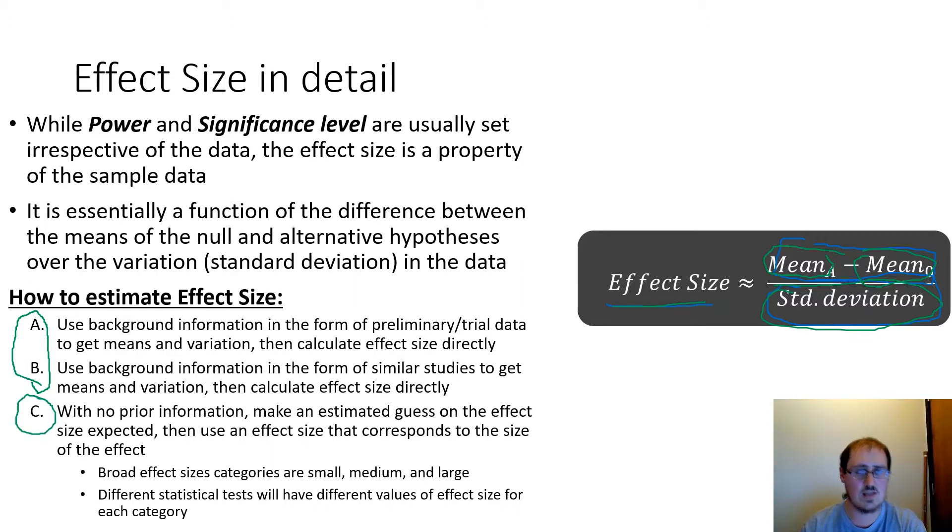The second main way, so C, is if you have no information. You really can't estimate any of those things based on other work. You can make essentially an estimated guess of effect size. A lot of times this is put out by thinking of them in broad categories, like small, medium, and large, and just going with one of those.